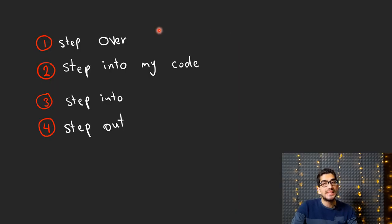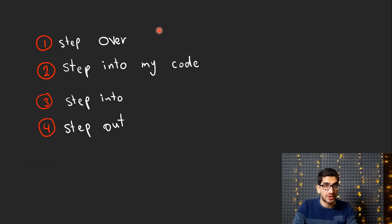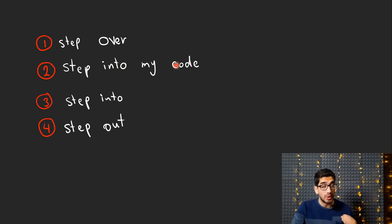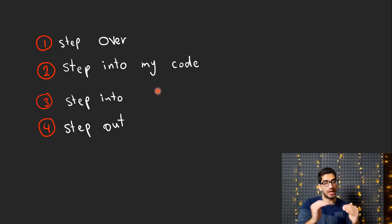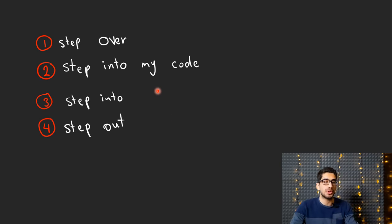Here is a summary: 'Step over' runs code line by line without entering any function or class. 'Step into my code' runs each line and goes inside any function or class that is your own code, not other modules. 'Step into' runs each line and goes inside any function or class — both your code and other packages. 'Step out' simply steps out of the current function.